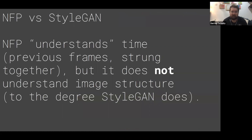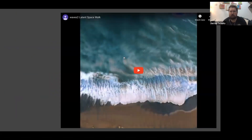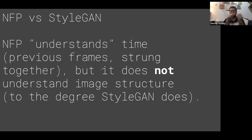Next Frame Prediction understands time — and I say 'understands' loosely because none of these machines really understand things — but it understands time because it understands sequence: a frame, then another frame, then another frame. But it does not understand generalized image structure, which is what StyleGAN is good at. StyleGAN can understand what a beach scene looks like, whereas Next Frame Prediction just understands the differences or changes in a video.